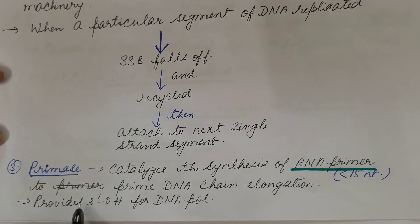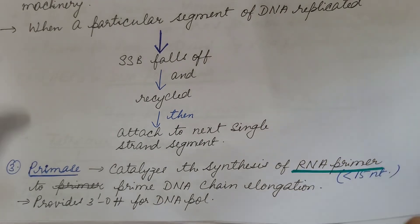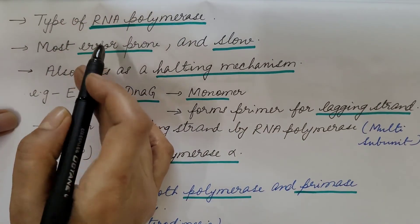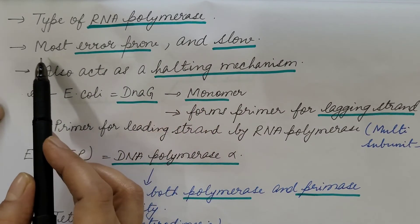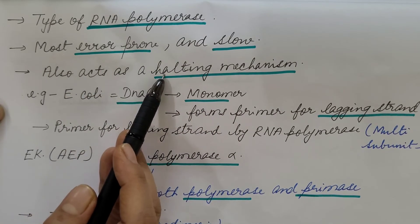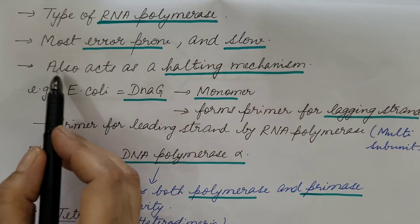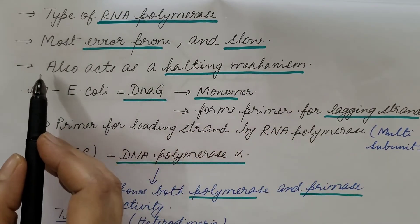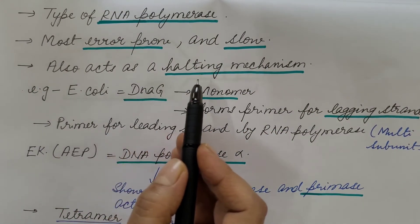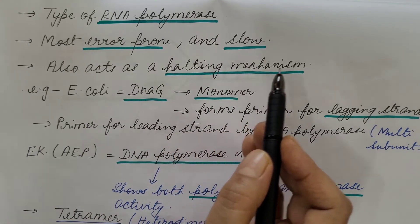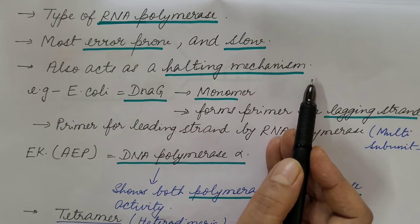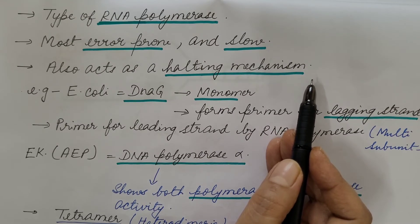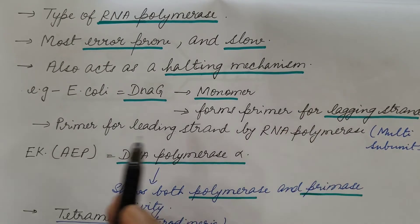So this primase is a type of RNA polymerase because it synthesizes RNA. It is more error-prone and slow, so it also acts as the halting mechanism so that the leading and the lagging strands are synthesized at the same pace. This is done by halting the progression of the replication fork.